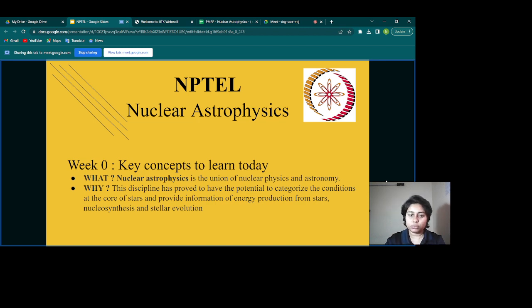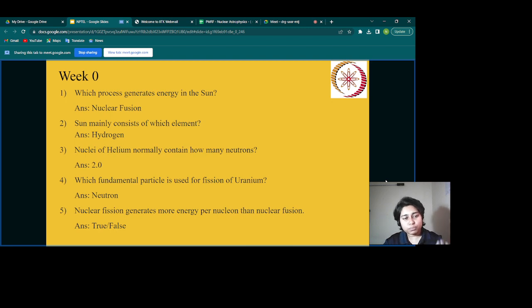Now let us go through some very preliminary problems of class 12 level. These are ground level questions which are not heavily involved in this course, but you need to know these things because they are very basic. The first question is: which process generates energy in the Sun? That is nuclear fusion.